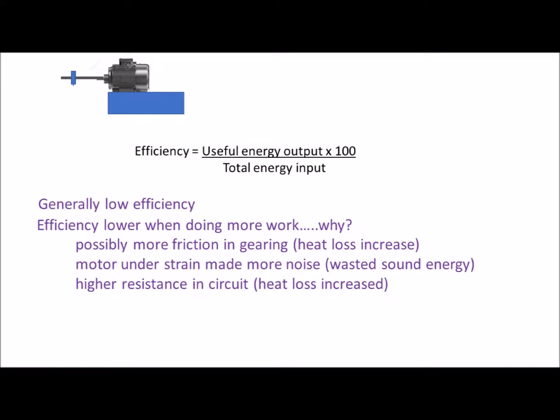And finally, if you were asked about the difference in efficiency when different masses were lifted, generally, the greater the mass, the lower the efficiency. If you're asked why that is, then generally, the efficiency is lower because more work is done. You could argue that that's because there's more friction in the gearing or greater heat loss because of that. Or you could say the motor is under more strain, makes more noise, so more of the energy is wasted as sound.